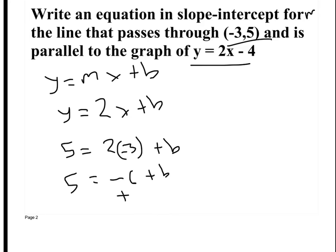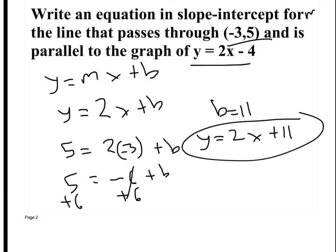I add 6 to both sides, and b is equal to 11. So now I have everything I need: y equals 2x plus 11. Is this line parallel to y equals 2x minus 4? Yes, it is.